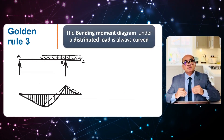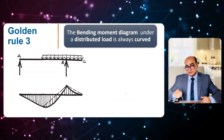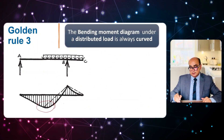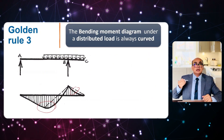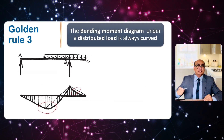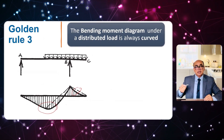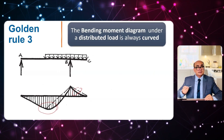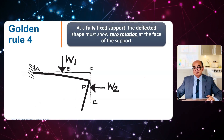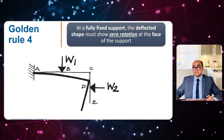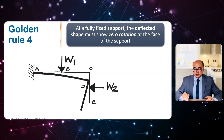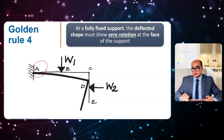The third golden rule is that the moment under a distributed or uniformly distributed load is always a curved one — you can see a curved bending moment diagram here. If we only had point loads, we would have straight lines. The fourth rule is that at a fully fixed support, the deflected shape must show zero rotation at the face of the support.